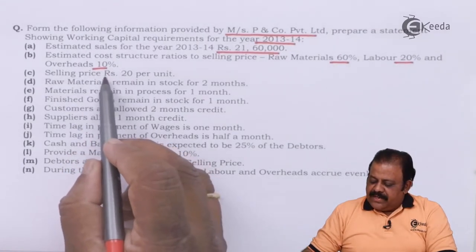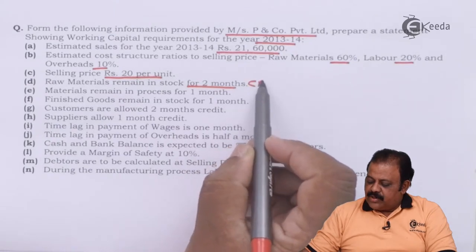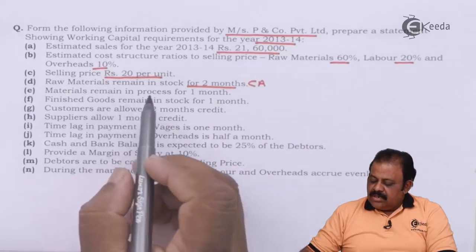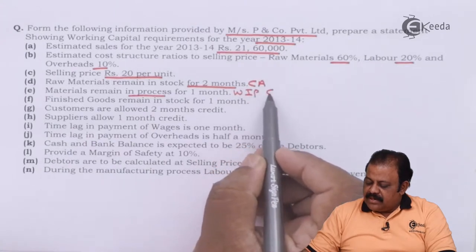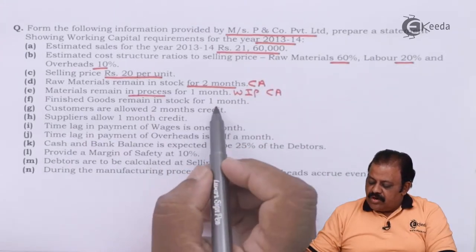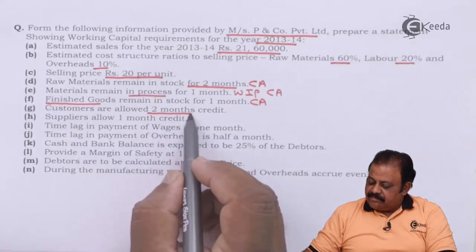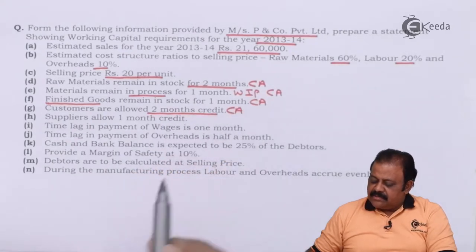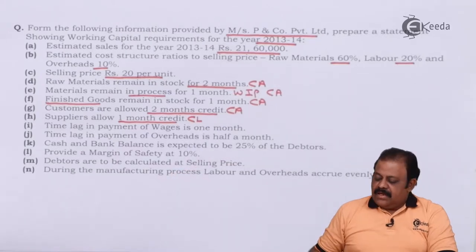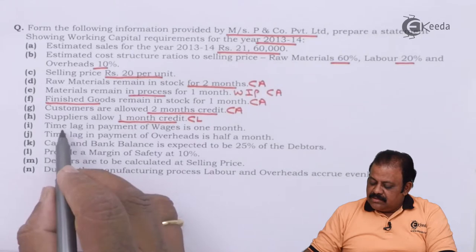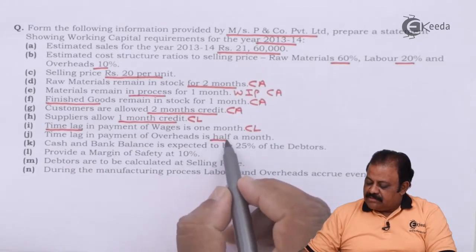Selling price is rupees 20 per unit. Raw materials remain in stock for two months — this will be part of current assets. Materials remain in process for one month — this is work in progress, a current asset. Finished goods remain in stock for one month. Customers are allowed two months credit — current asset. Suppliers allow one month credit — current liability. Time lag in payment of wages is one month — current liability. Time lag in payment of overheads is half a month — current liability.